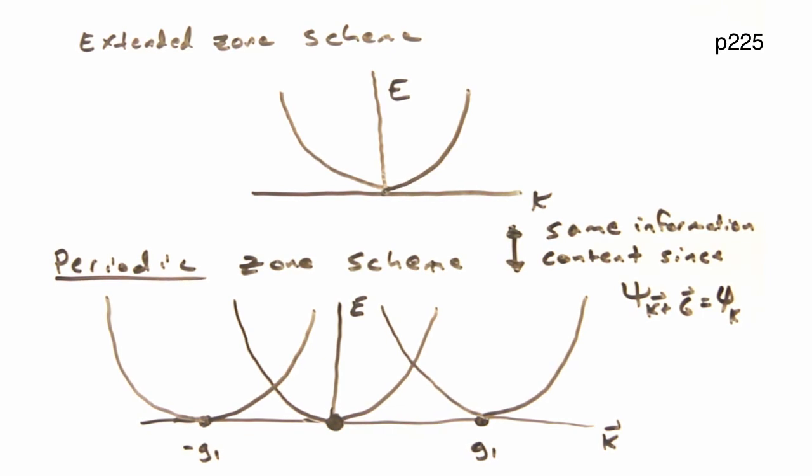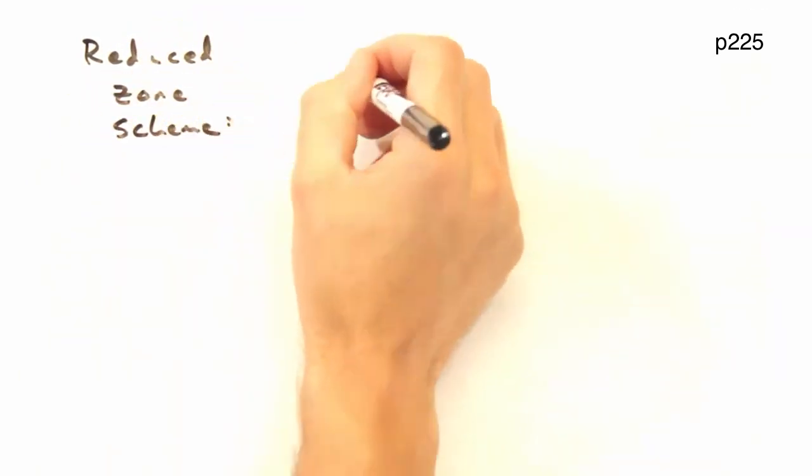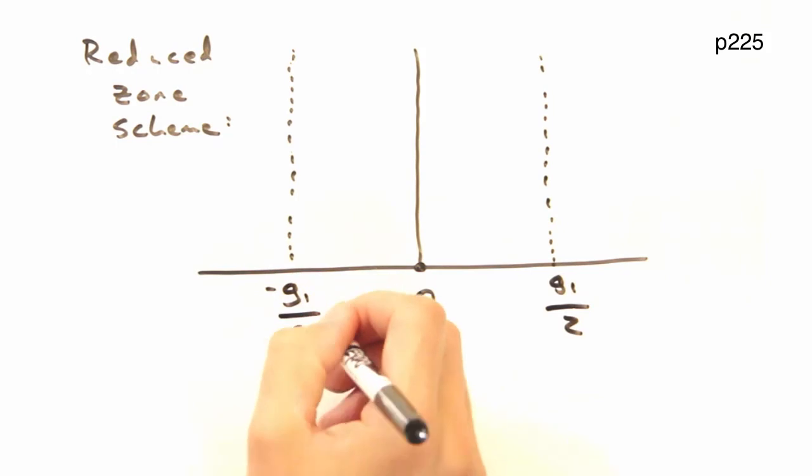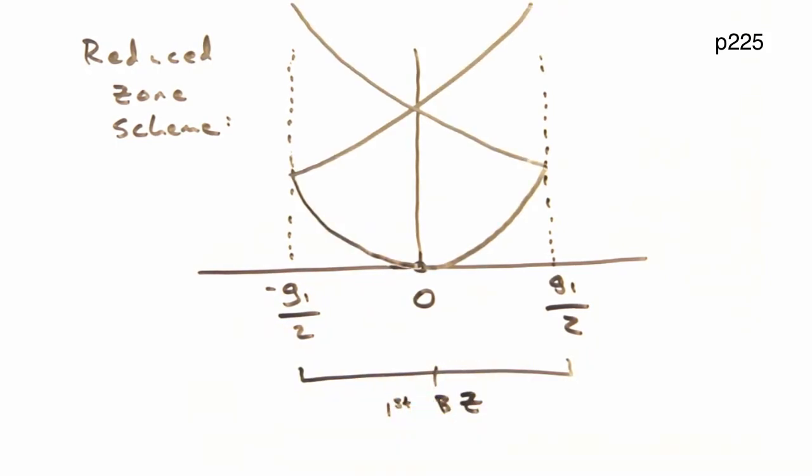This seems like an impractical way of representing the data. Can't we condense this business down? Yeah, don't we usually plot it just within the first Brillouin zone so it looks like this? Yeah, that's nice, and we call that the reduced zone scheme, and it's the most common of the three to be presented when you actually look at experimental dispersions.